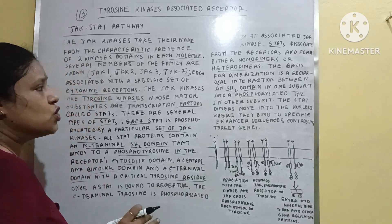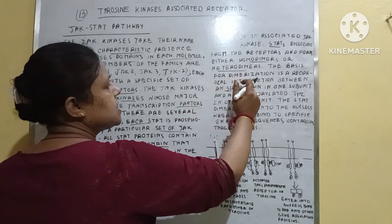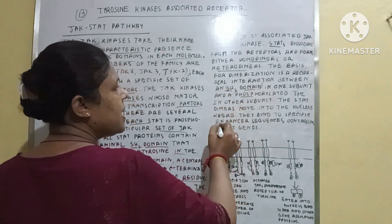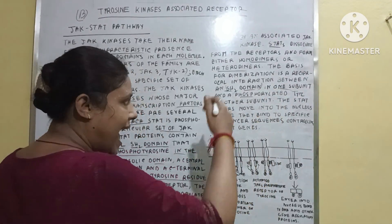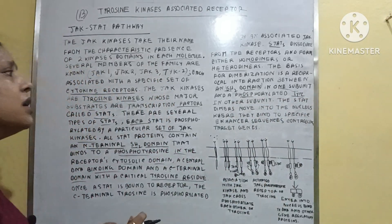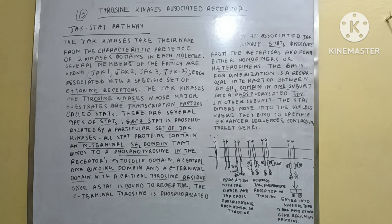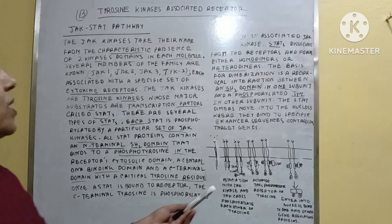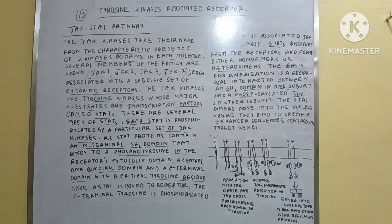The basis for dimerization is a reciprocal interaction between the SH2 domain of one subunit and the phosphorylated tyrosine of the other subunit. The STAT dimers then move into the nucleus, where they bind to specific enhancer sequences controlling target genes.